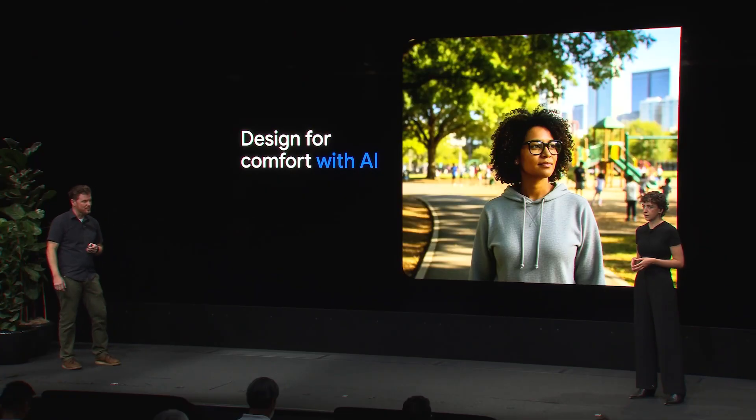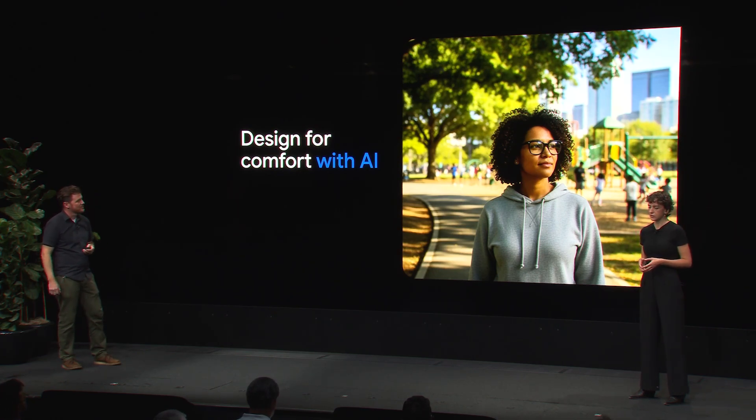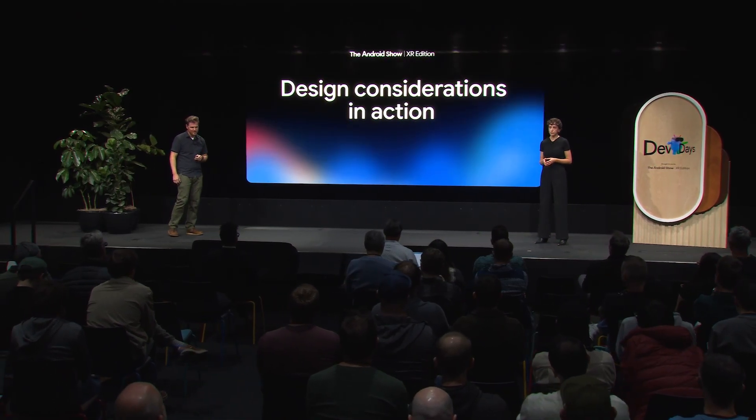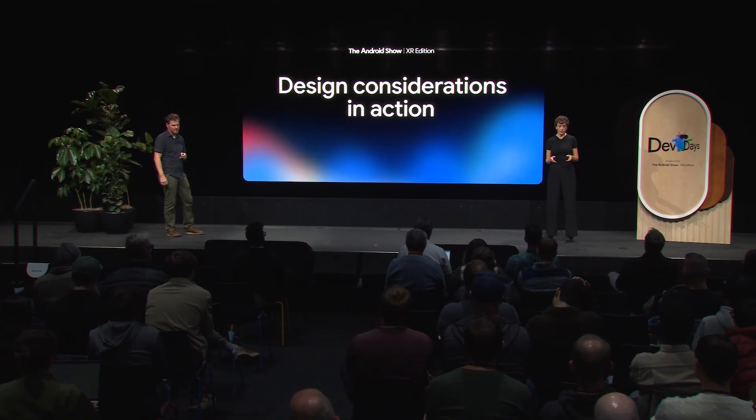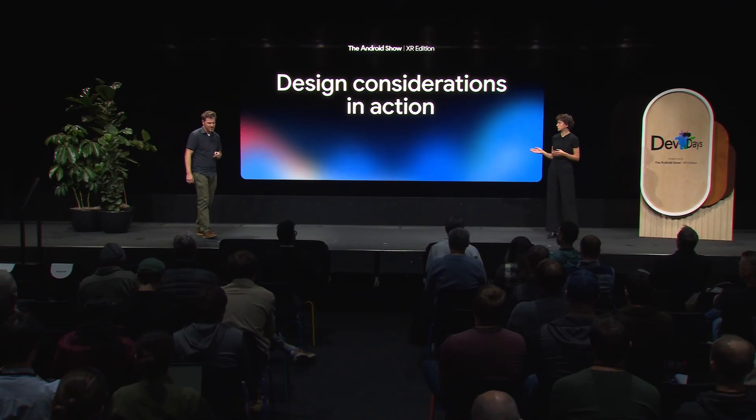Lastly, design for comfort with AI. Users are more comfortable with an AI experience when they trust it, and you can increase trust by making your experiences more helpful and reliable. Additionally, consider how you can make experiences pleasant to use by adjusting things like tone and personality. And most importantly, always make sure that users can easily guide, correct, or override an AI experience as needed. For example, have AI ask for permission to turn a camera on in an experience and notify the user when it has turned it off. Paul is now going to show you some examples of these considerations in action.